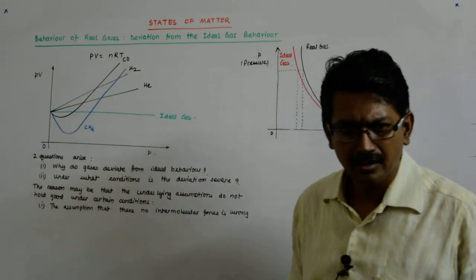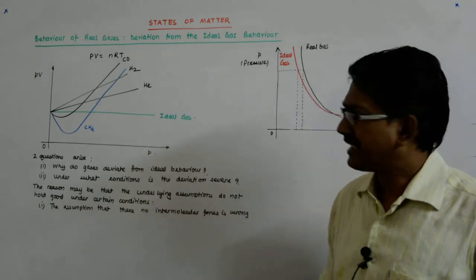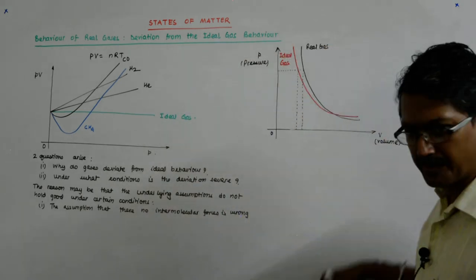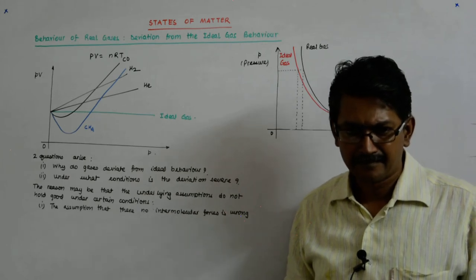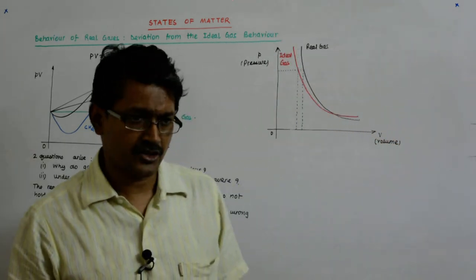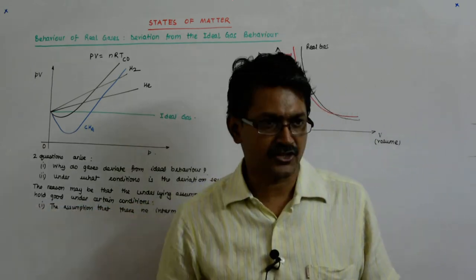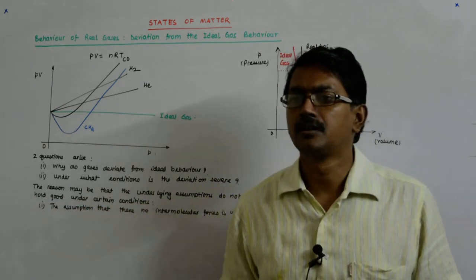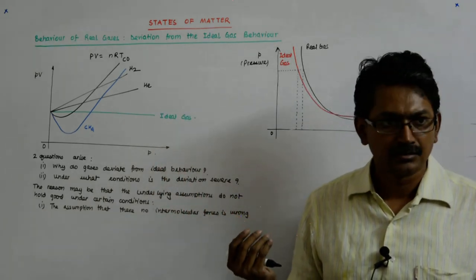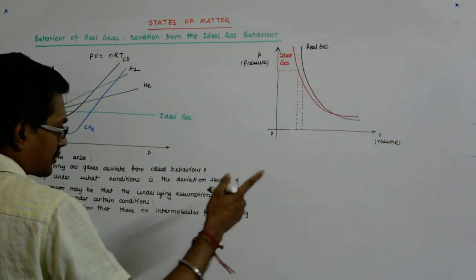Number one: We said the assumption that there are no intermolecular forces under certain conditions are changing. You see, they start approaching the ideal behavior as P becomes less. They start deviating as the P becomes higher. Many times you are dealing with chemical reactions which are happening at atmospheric pressure. But what happens if you subject a gas to 200 atmosphere of pressure? Then you will find so many reactions which were not taking place suddenly started getting initiated. So when the conditions are severe, things change. So the assumptions that there are no intermolecular forces is wrong.